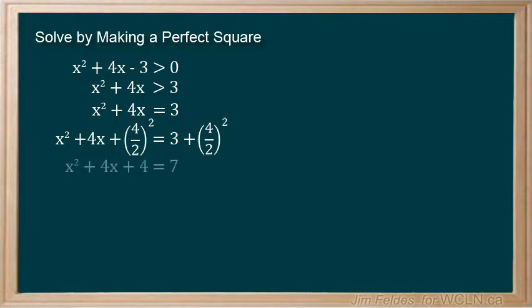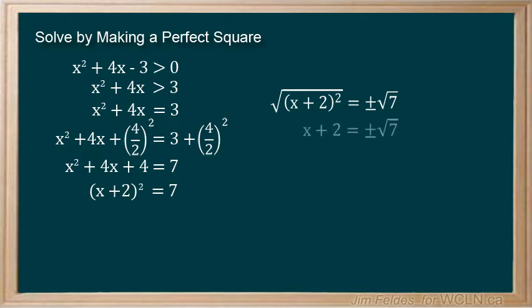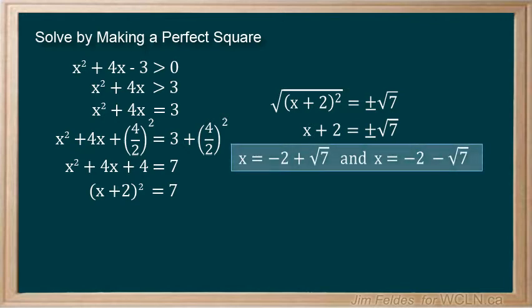So now we can factor our modified expression to be x plus 2 all squared is equal to 7. And then apply the square root principle to find our zero points.